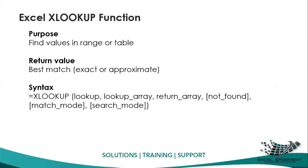The syntax of XLOOKUP is defined by its function arguments. The first is the lookup value, then the lookup array, then the return array. The 'not found' argument is key — with VLOOKUP, errors require nesting an IFERROR function, but in XLOOKUP we don't need that. We can define customized text for when a value is not found. Then we have match mode with three different options, and search mode with different options as well.